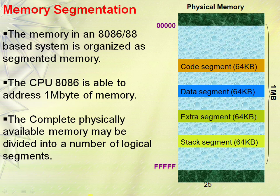In this session we will discuss about memory segmentation. As we know, the amount of memory that can be interfaced with the 8086 is 1 MB. That depends on the number of address lines — as it has 20 address lines, we can interface up to 1 MB of memory.